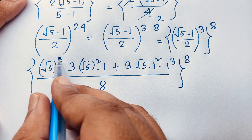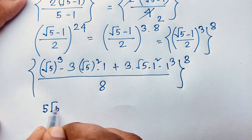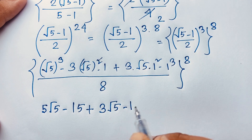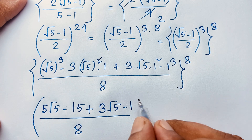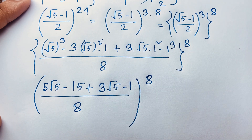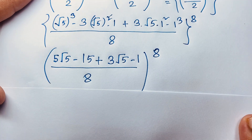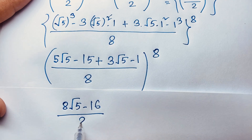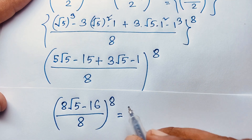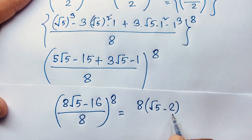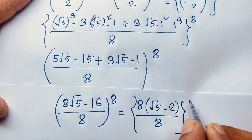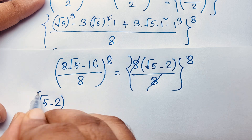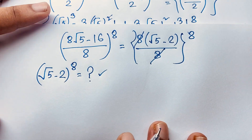Then expanding the cube: (√5)³ = 5√5, and 3×5 = 15, and 3√5 − 1 over 8, all to the power 8. Simplifying: (8√5 − 16) / 8 to the power 8. Since 8 is common, this gives (√5 − 2)^8. So our new question is: what is (√5 − 2)^8?